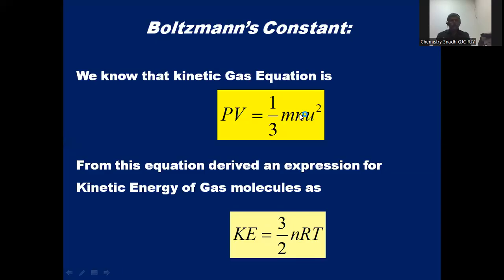We know that the kinetic gas equation, which was derived from the postulates of kinetic molecular theory of gases, is PV = 1/3 mn u², where P is the pressure, V is the volume, m is the mass of a gas molecule, n is the number of gas molecules, and u is the RMS (root mean square) velocity.